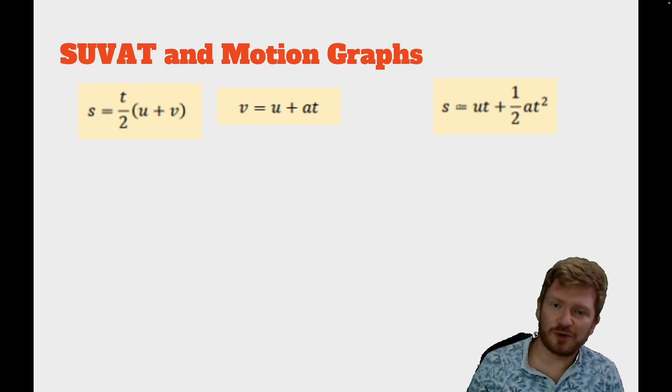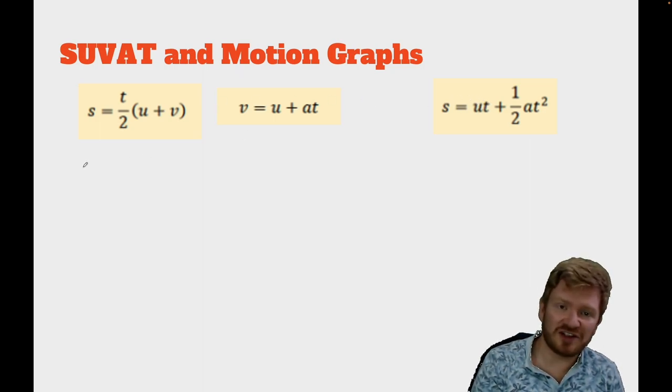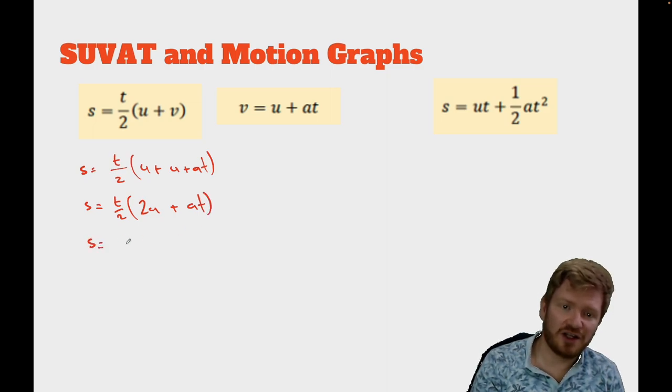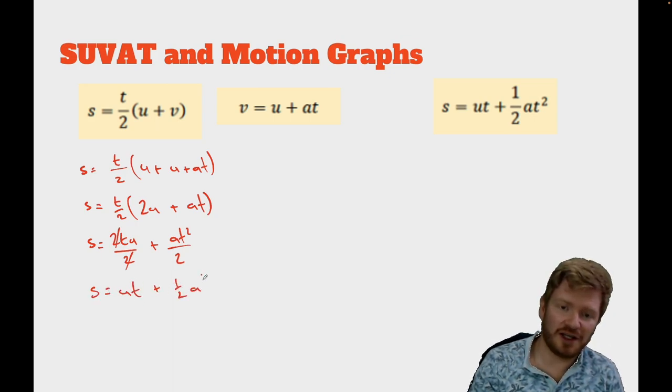We can do the same thing again here. So, this is a pretty classic equation. This one has, instead of getting rid of u, I've got rid of v from this equation. So, I've already got a term for v. So, it's just exactly the same procedure again. I'm just going to rewrite this and I'm trying to get rid of v this time. So, that would be u plus, instead of v, I can just write u plus at. And the same thing happens again. This becomes t over 2 lots of 2u plus at. Multiply out the brackets. It's s is equal to 2ut over 2 plus at squared divided by 2 as well. 2 divided by 2 cancels. So, s is equal to ut plus a half at squared.